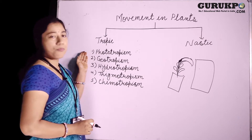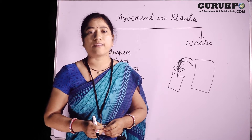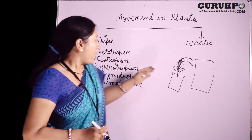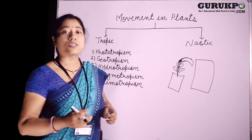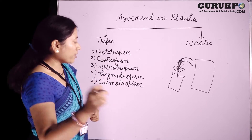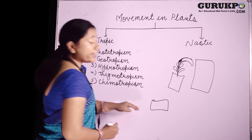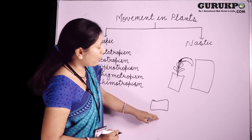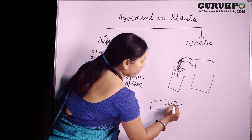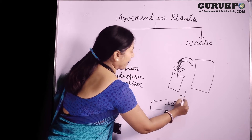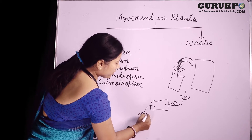Now next is geotropism. Geotropism is the movement of a plant part in response to gravity. Shoot shows negative geotropism while root shows positive geotropism. For example, when we take a potted plant and tilt it horizontally on the ground, after some time we will observe that the shoot shows negative geotropism while its root shows positive geotropism.